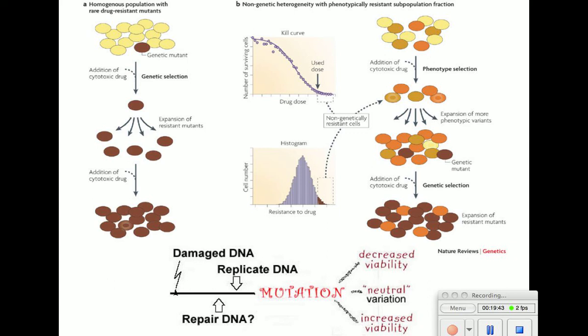We are running out of antibiotics because people abuse them — for a little cough they take antibiotics and that makes the bacteria stronger and more resistant. However, there is a little hope: scientists have discovered a new antibiotic, but the problem is we can't grow it in the lab. It lives under extreme conditions — extreme pressure and toxic soil — that we're having trouble recreating. Once we figure out how to grow it, we'll have a new super antibiotic.